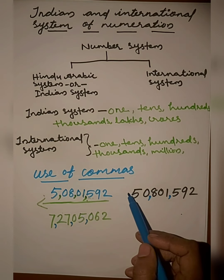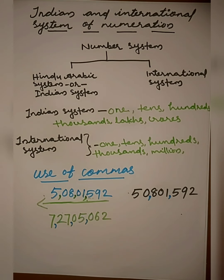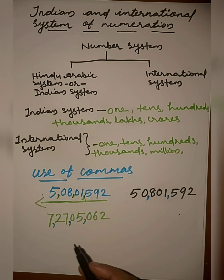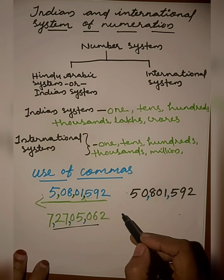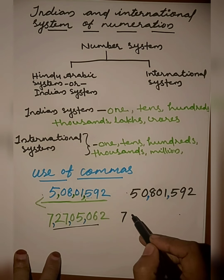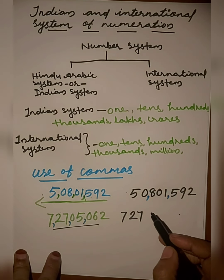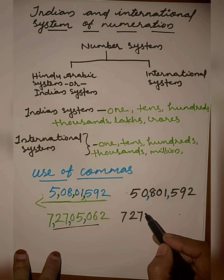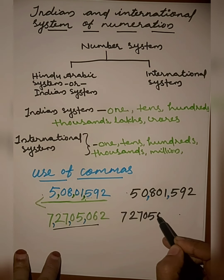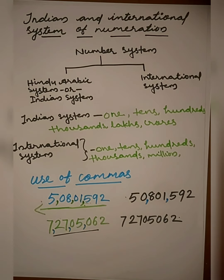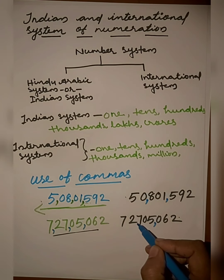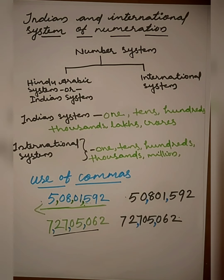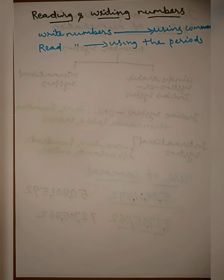Let's check an example — placing commas in the International number system for the number 7,27,62,5062. The first comma goes after three digits from the right, and the second comma goes after the next three digits. Are you clear on this?